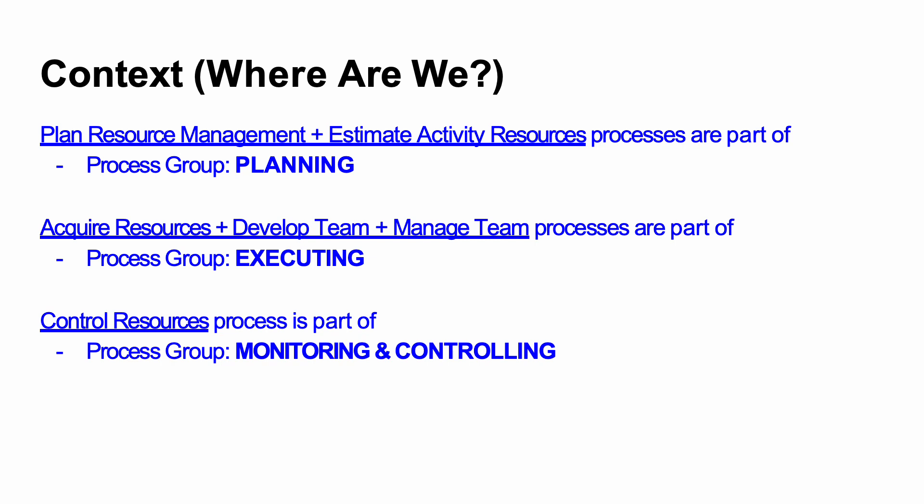Acquire resources — human or otherwise — then develop the team and manage the team are part of the executing process group. Those obviously relate to the human component: developing a strong, high-performing team and managing individual resources within those teams. These happen when the project enters its doing stage. The last process, control resources, is part of the monitoring and controlling process group.